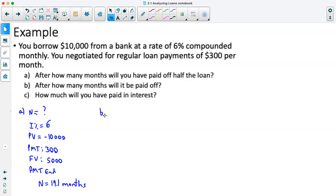So it will take 19.1 months to pay off the first half of the loan. We'll now look at how long it takes to pay it off entirely. We'll write out everything that's going to go into our calculator again. We're solving for N, our interest rate is still 6%. We started out owing $10,000 with payments of $300. And in this case, because it's going to be paying off the loan entirely, our future value is going to be zero.